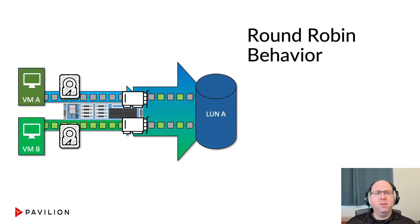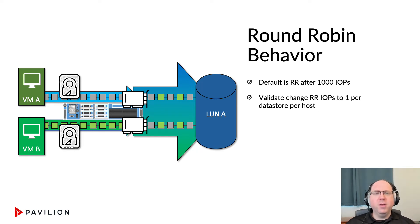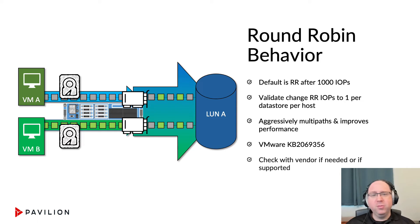Now you've got LUNs connected. The VMware default of a thousand IOPS before it starts to round robin between available paths might actually slow you down. That is default behavior — it'll use one path until you hit a thousand IOPS and then move to another path for a different VM, but not for the same VM. Validate this. Determine whether a round robin IOPS of one, to forcefully tell it to multipath per datastore per host, is advantageous to your workload. In some cases it actually is. There's a VMware KB article that will tell you how to identify this and change your LUN architecture. Check with your vendor to see if it's needed or supported — sometimes they'll have plugins for it, sometimes you don't need it. If the interconnects are fast enough, we don't want the overhead of aggressively multipathing.